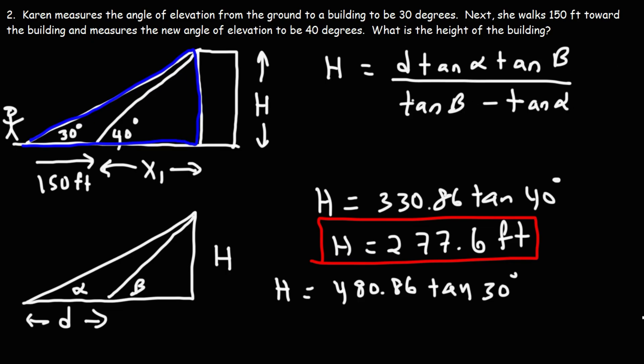When using the formula, if you're going to type this in your calculator, put this in parentheses so you'll get the right answer. All right, so let's go ahead and plug this in. d, we can see d is 150. Alpha is going to be the smaller of the two angles, so alpha is 30. Beta is 40.